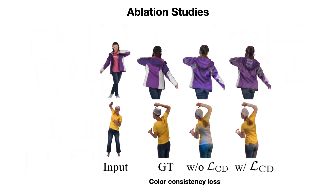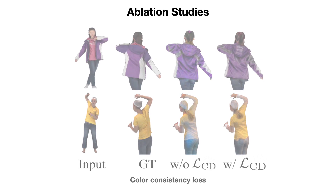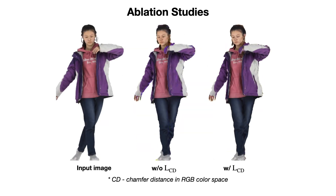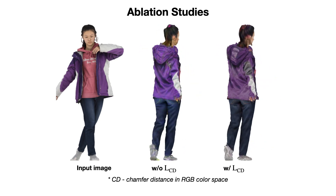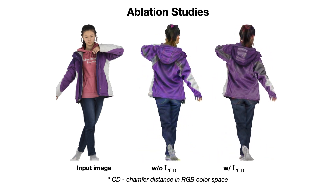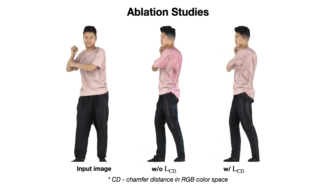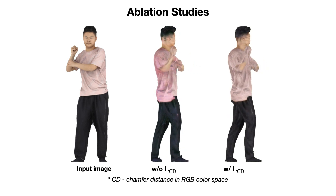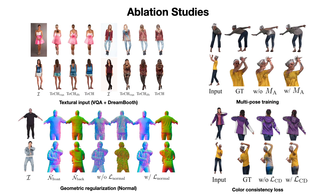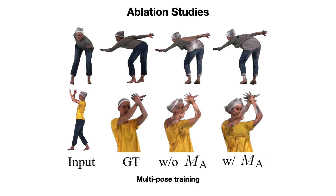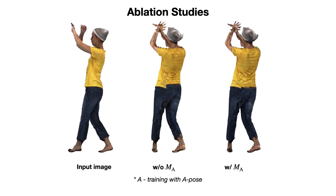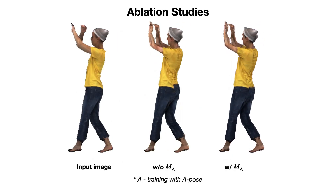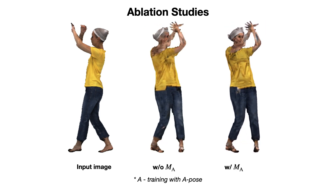Thirdly, we show the effect of using color consistency loss. To address the color misalignment caused by oversaturated effects from SDS, we introduce color consistency regularization. Specifically, we use a color chamfer loss to enforce color consistency in RGB space. To tackle the issue of self-occlusion caused by specific poses in the input image, we employ multi-pose training. In addition to the original input pose, the 3D human models are also reposed into the A-pose during the texture optimization process.